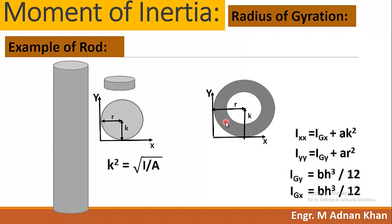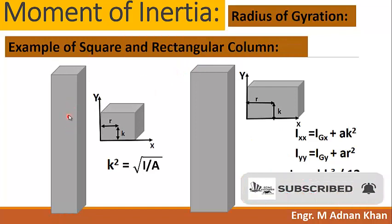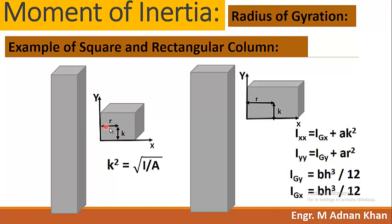For square and rectangular columns: a square column has equal radius of gyration distances along both the x-axis and y-axis — notated as k and r — so its behavior is the same in both axes. In a rectangular column, the radius of gyration distances differ along each axis, so the behavior under the same load will be different depending on the axis of bending.